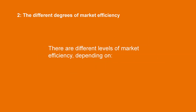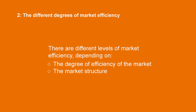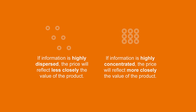But this hypothesis is more of an ideal benchmark to which to compare normal markets, which are all, at some level, inefficient — even stock markets. In reality, there are different levels of market efficiency, depending on the degree of efficiency of the market and on the market structure. The degree of efficiency depends chiefly on the dispersion of information. If information is highly dispersed, the price will reflect less closely the value of the product. If information is highly concentrated, the price will reflect more closely the value of the product. For instance, the market for grocery stores has very dispersed information — I need to walk for two hours to visit all grocery stores and check all the prices for milk. Conversely, the stock market has very concentrated information; I can watch a computer terminal and get price information almost instantly for all stocks.